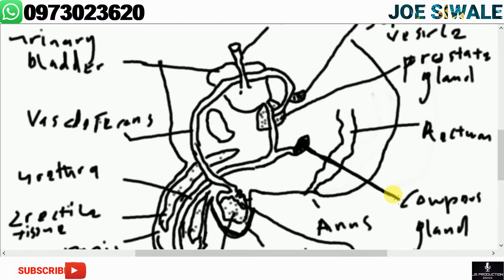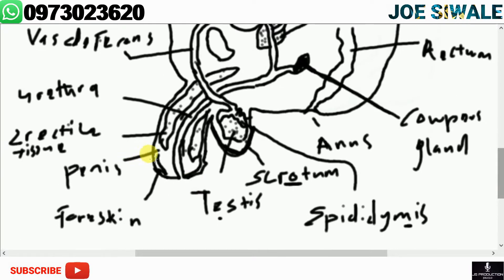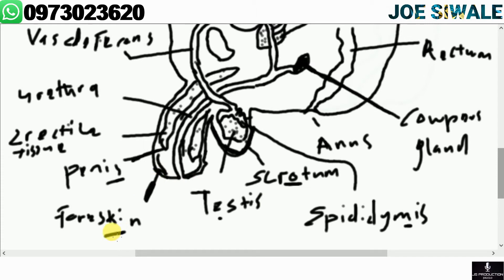The penis is an erectile intermittent organ used during copulation. It becomes erect when the male is sexually excited. The tip is usually covered by the foreskin, which is very sensitive. The penis introduces the semen into the female body via the vagina.